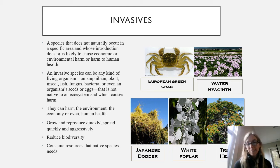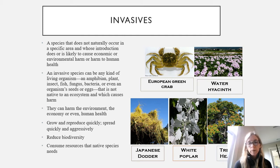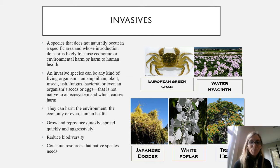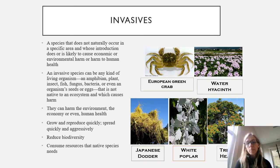That harm can be environmental, economic, or to human health. Traits of invasive species typically include rapid growth and reproduction, invasive and aggressive spread, and a reduction in biodiversity. We often see competition between the invasive species and native species in the ecosystem.